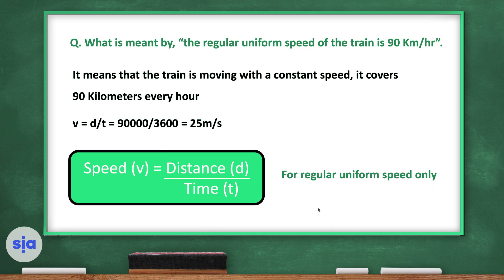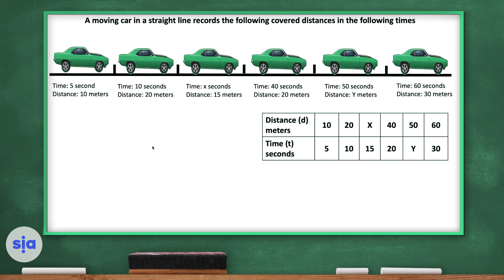Let's take this example: a moving car in a straight line records distances over time. In 5 seconds it covers 10 meters; at 10 seconds total, 20 meters; at an unknown time x, 15 meters; at 40 seconds, 20 meters; at 50 seconds the distance is unknown (y); and at 60 seconds, 30 meters. We represent these numbers in a table.